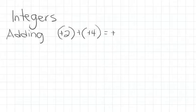you keep the sign, so it's going to stay positive, and then you just add the two digits. So 4 plus 2 is 6, so your answer is positive 6.